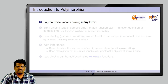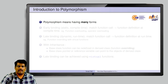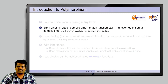Let us see what is the meaning of polymorphism. Polymorphism means having many forms, so we have a single function name and different implementations. In short, polymorphism means having many forms.